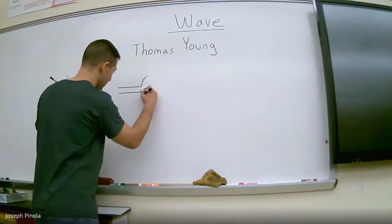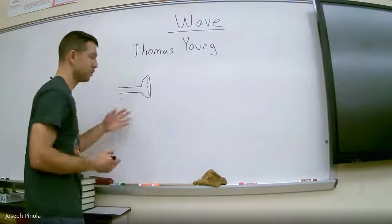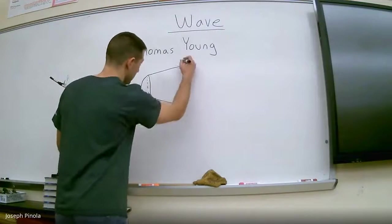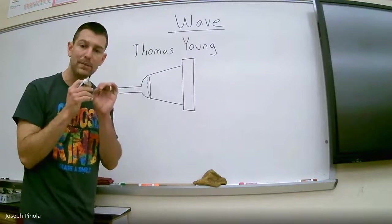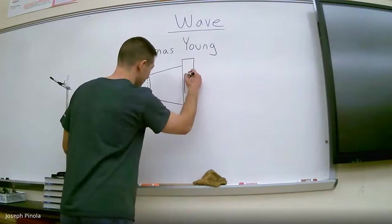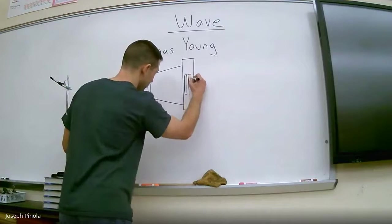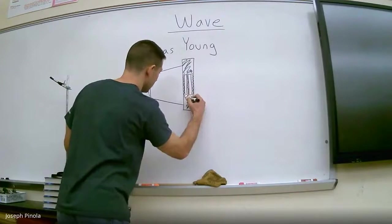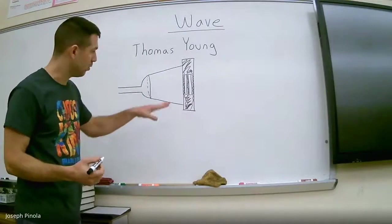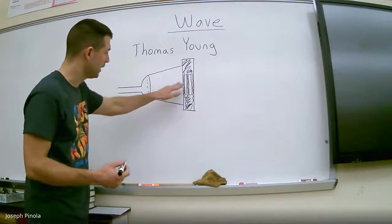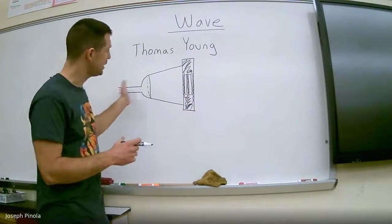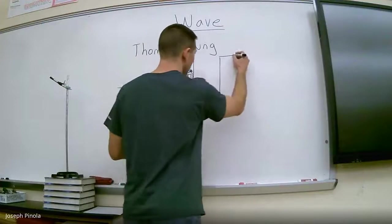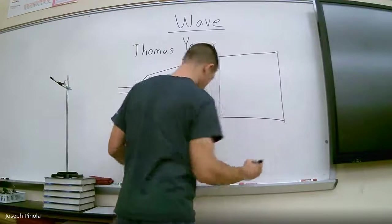He took a source of light, much like Einstein did, and he shined that light at an object that had two empty slits cut in it, and those slits looked something like this. And so the rest of the object was closed off, but the two slits, light would be able to pass through. And so Young sent his light through the two slits, and he shined it on another piece of paper.